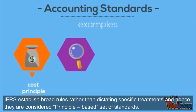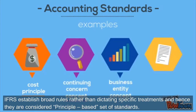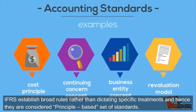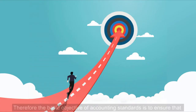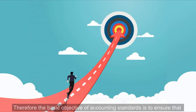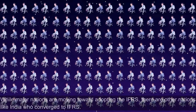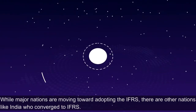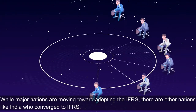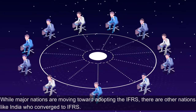IFRS establish broad rules rather than dictating specific treatments, and hence they are considered a principle-based set of standards. Therefore, the basic objective of accounting standards is to ensure that there are no differences in the approach to accounting and to standardize the presentation of accounts. While major nations are moving towards adopting the IFRS, there are other nations like India who converge to IFRS.